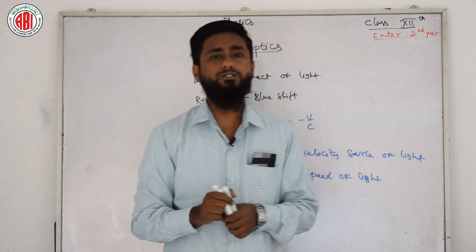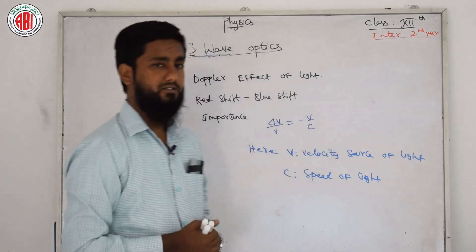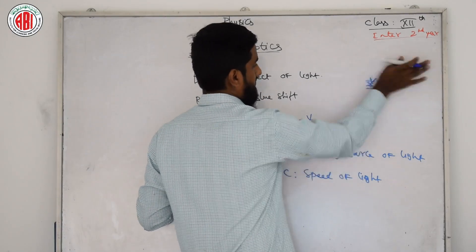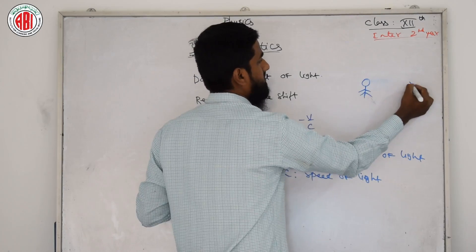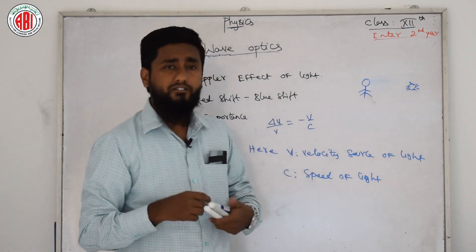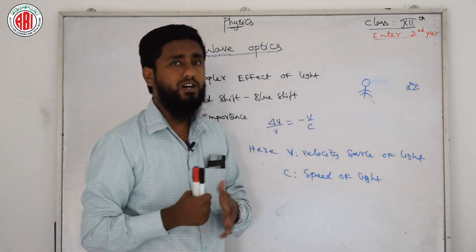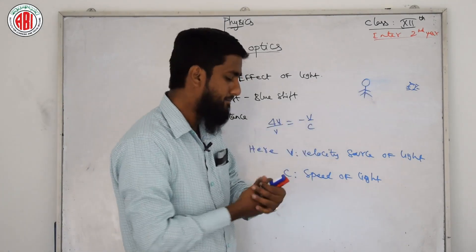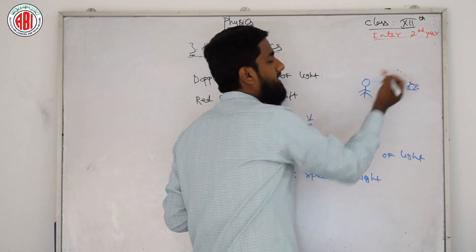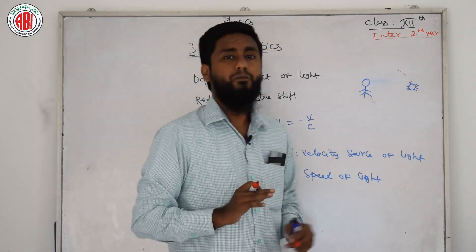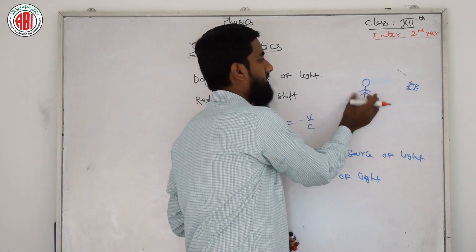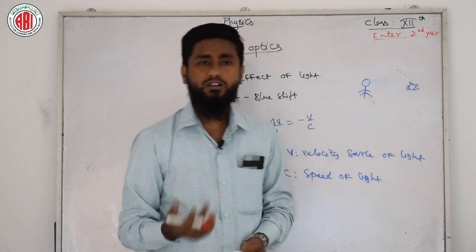Here, v is the velocity when the source of light is moving away from the observer. The observer stands at the same position while the sun or source is moving over time. v refers to the source moving away from the observer — or equivalently, the observer moving away from the sun or source of light.